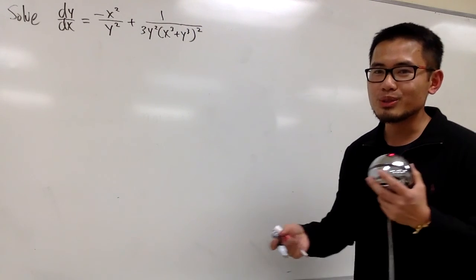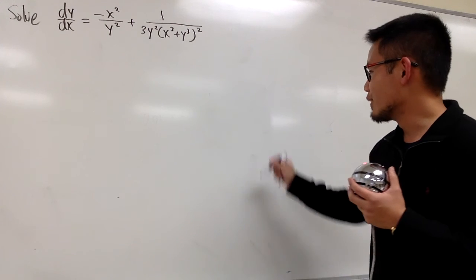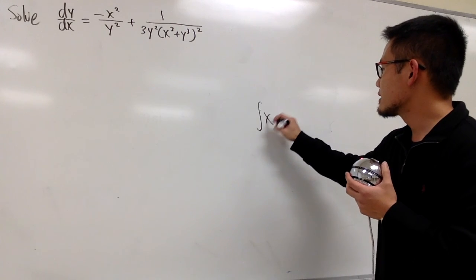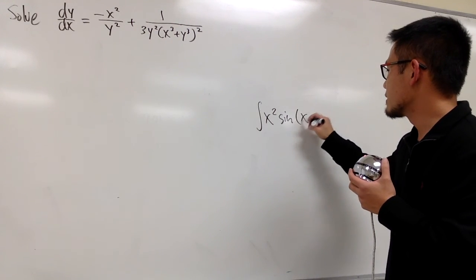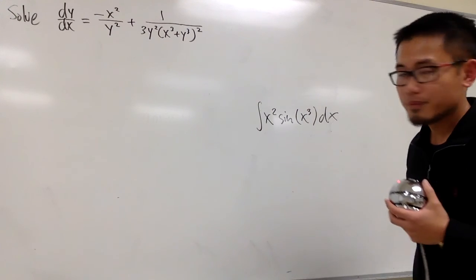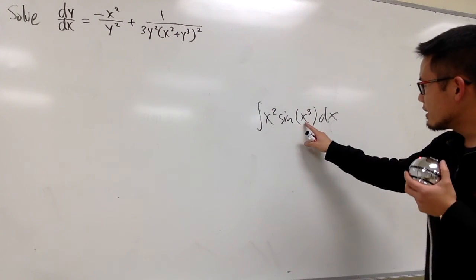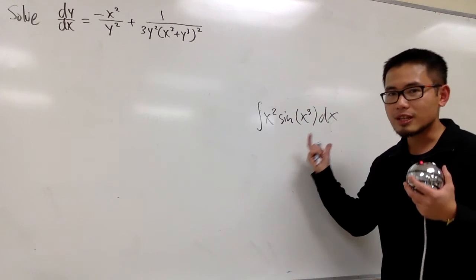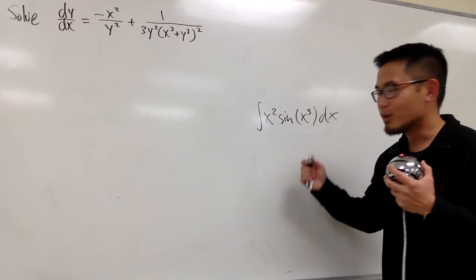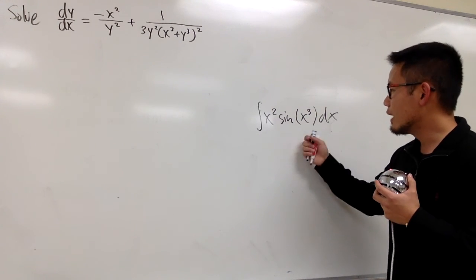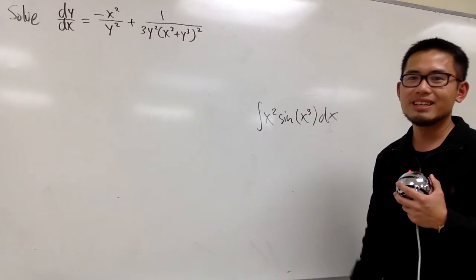Remember, how do we use to do integrations? For example, how would you integrate x squared times sine of x to the third power dx? Well, I pay attention to the inner function which is x to the third power, and then we do some substitution for that, right? And once we put this down, u equals to x to the third power. Hope for the best, right?